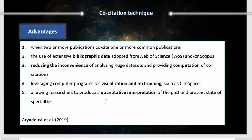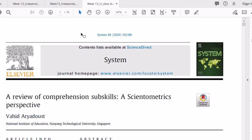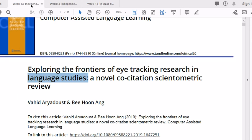The program we use is CiteSpace. And finally, co-citation analysis allows us as researchers to produce quantitative interpretations of the past and present state of specialties and perhaps make some predictions about the future of specialties. I'd like to pause briefly to show some of the papers we have been able to publish using co-citation analysis.